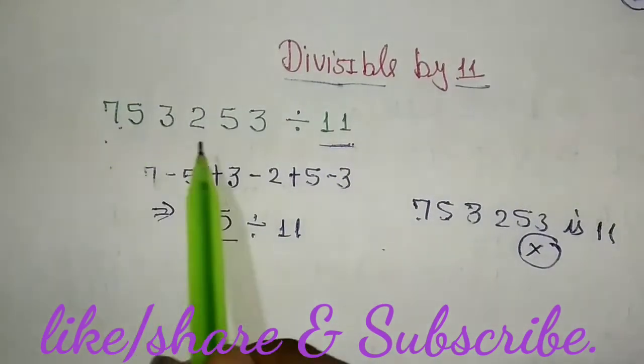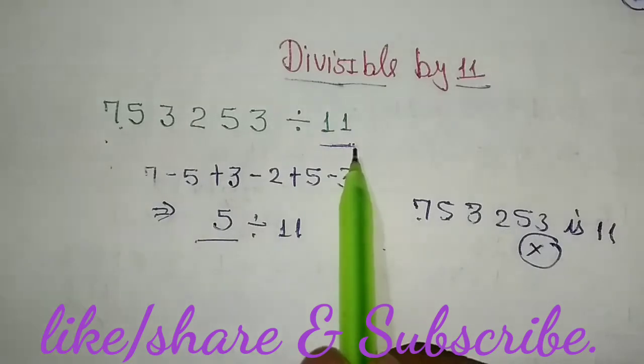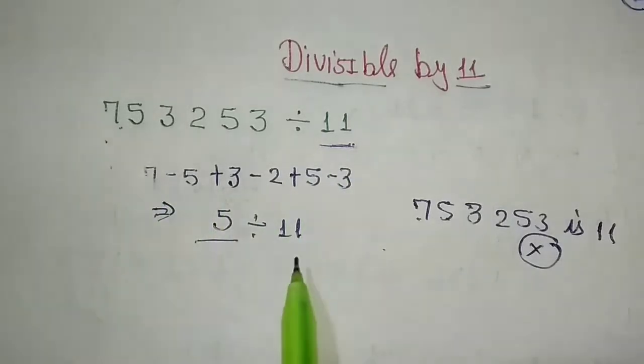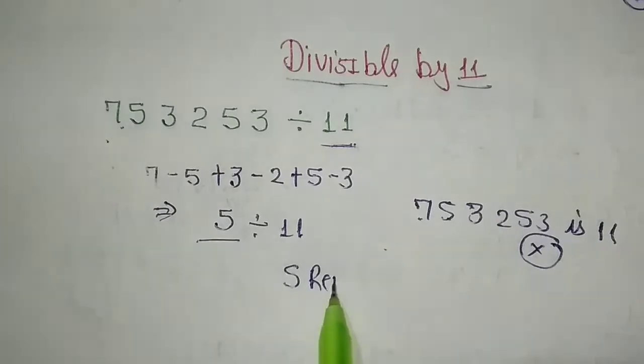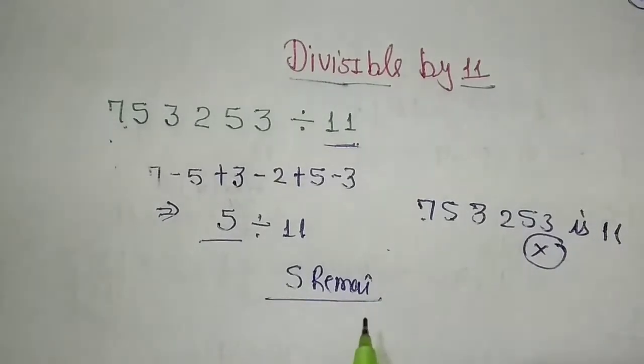If the original number is divisible by 11, then you'll find 0 for the remainder. Other example: